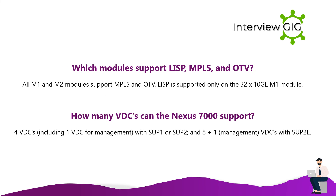Which modules support LISP, MPLS, and OTV? All M1 and M2 modules support MPLS and OTV. LISP is supported only on the 32X10GE M1 module. How many VDCs can the Nexus 7000 support? 4 VDCs including 1 for management with SUP1 or SUP2, and 8 plus 1 management VDC with SUP2E.